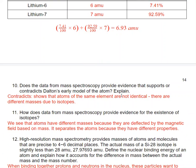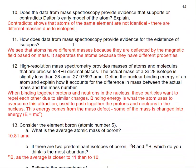So how does the data from mass spectroscopy, does that support or contradict Dalton's early model of the atom? So it contradicts it. It shows that atoms of the same element are not identical. There are different masses due to isotopes. How does mass spec support the existence of isotopes? We know that those atoms have different masses because they are deflected to a different degree by the magnetic field. So mass spectroscopy lets us separate the atoms based on their different properties.